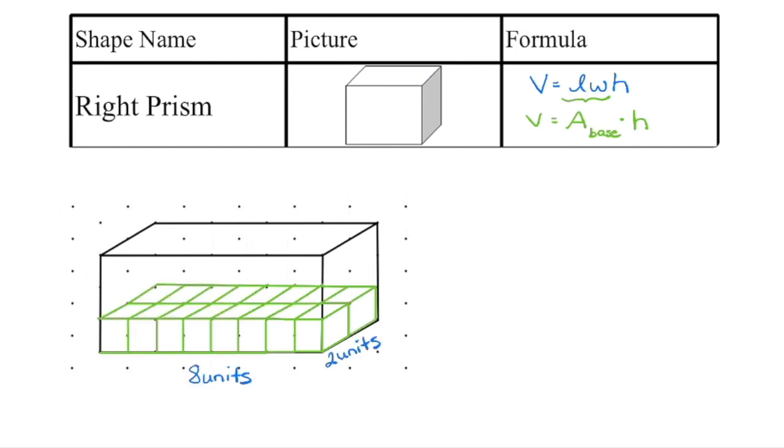If for example we happen to have a base that's 8 units by 2 units, if I take my one little cubic unit we can see that we're going to fit 8 times 2, 16 of those cubic units along my base layer on the bottom.